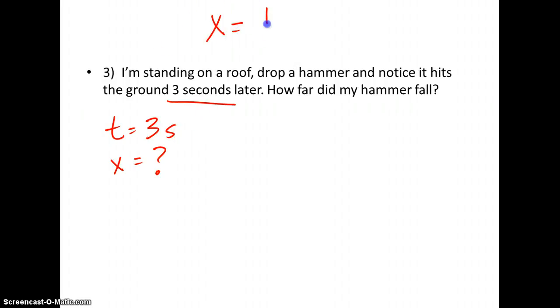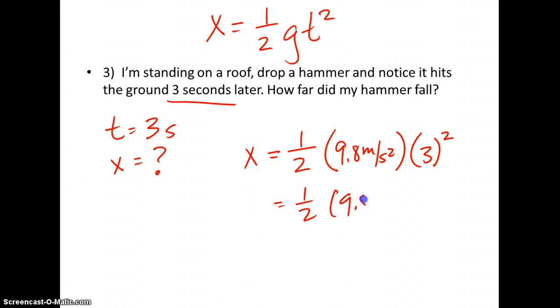So in this case, where you have x and t, you could use this formula, 1 half gt squared. And so in this case, I would take x, which is my unknown. I have 1 half. I know my gravitational acceleration is 9.8 meters per second squared. And my time is 3. I need to square that. So that works out to be 1 half, 9.8 meters per second squared, times 3 squared is 9. So my answer is 44.1 meters.